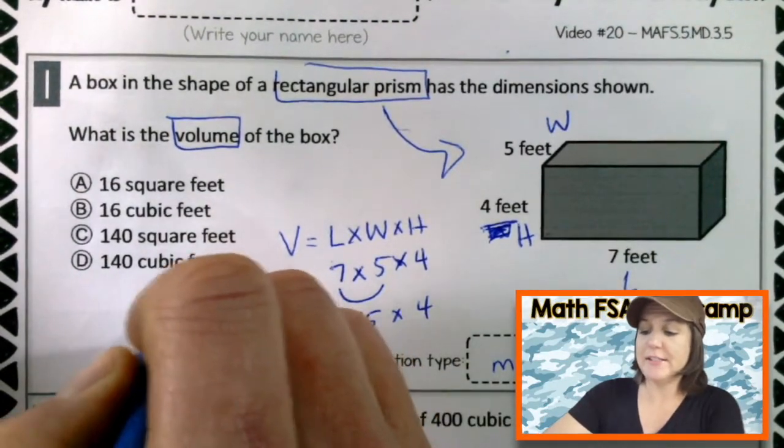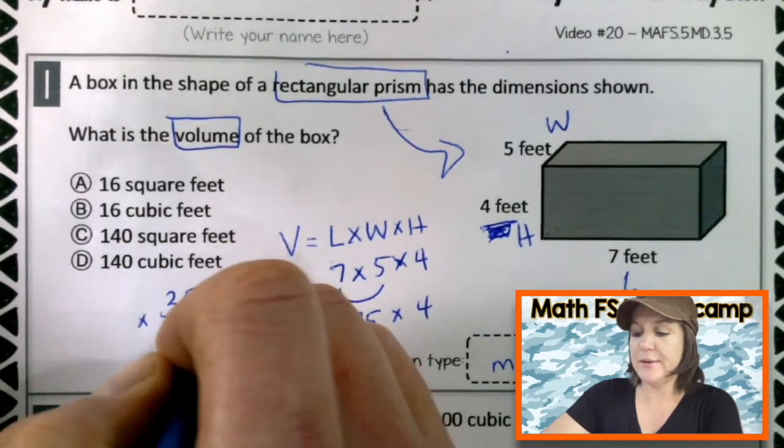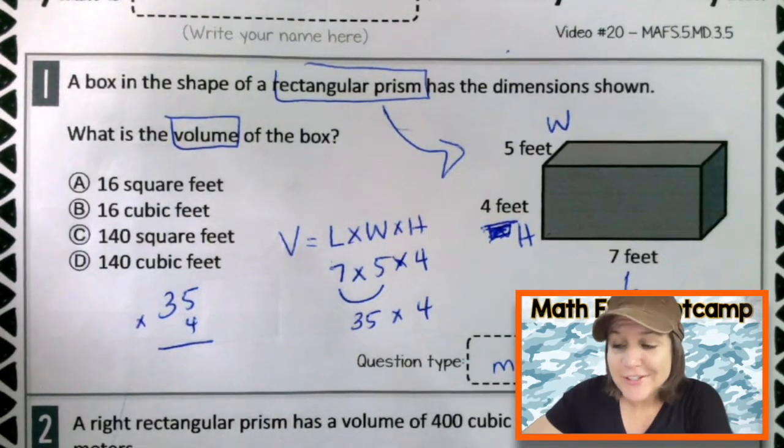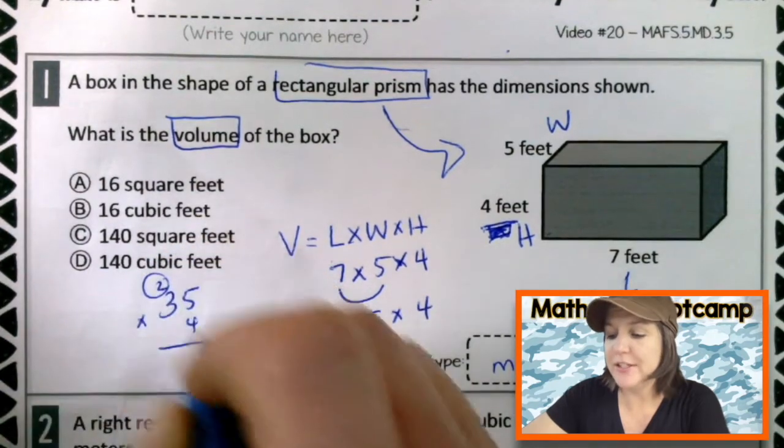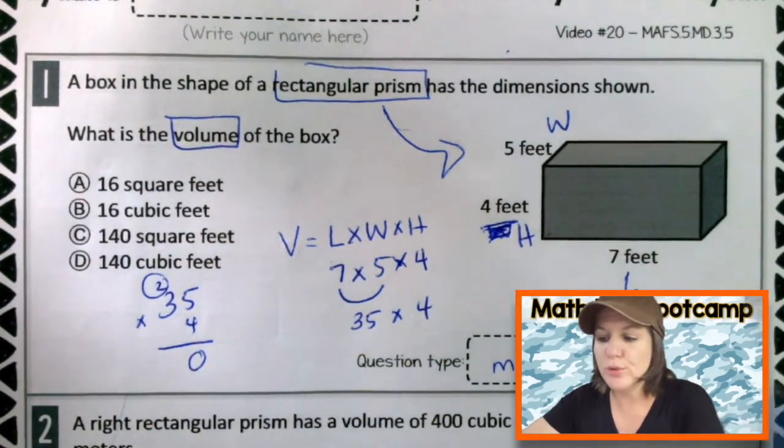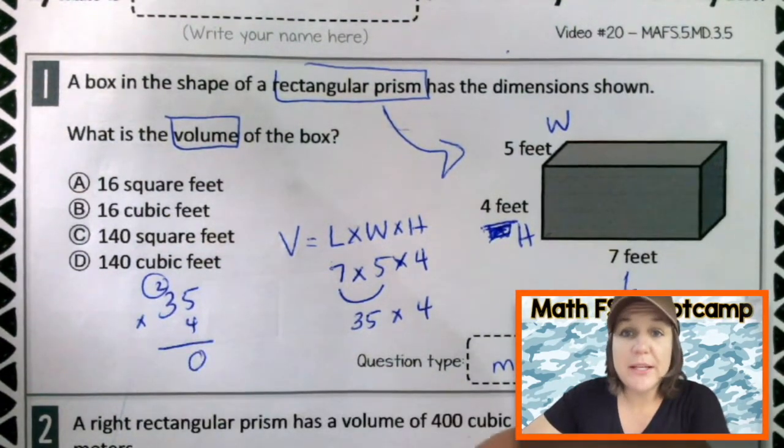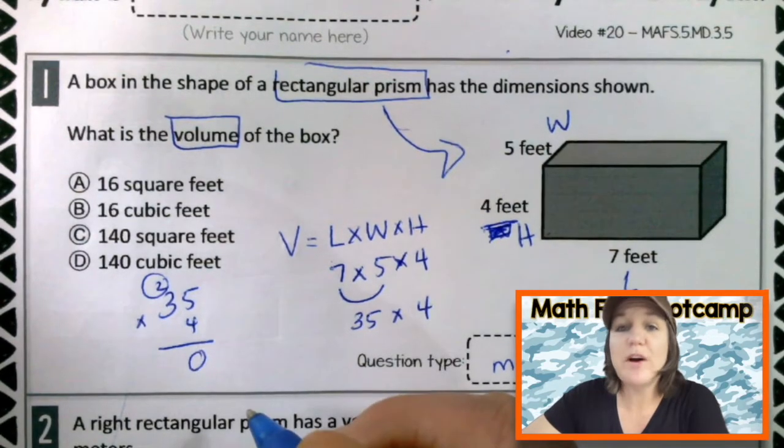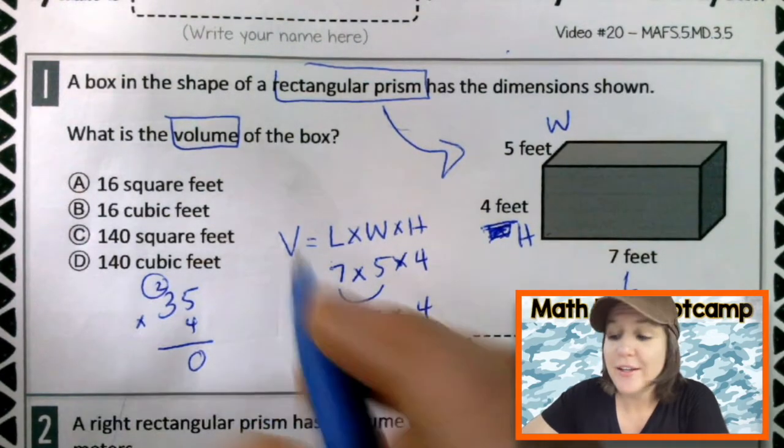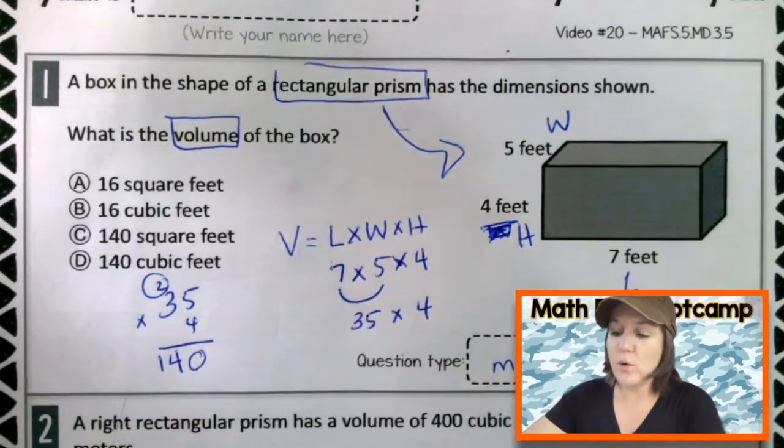So seven times five is 35 and 35 times four. Well, let me bring that to the side over here. Make sure we get this right. Four times five is 20. Oh, it's high up here in the clouds. Nice landing, dude. Four times three would be 12 and 12 plus two is 14. Alright. So 140.